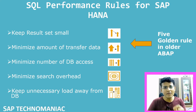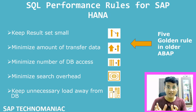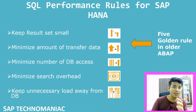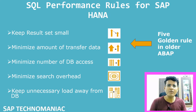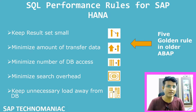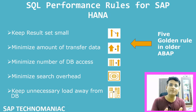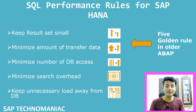The third rule is: minimize the number of database accesses. Whenever we hit the database with a select query, the database has to optimize and run that query. Sometimes one developer fetches data from VBAK, and another developer writes another select query on the same table. You should not write multiple select queries on the same table — reuse the existing query and add your own fields to the same internal table.